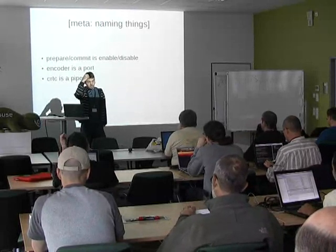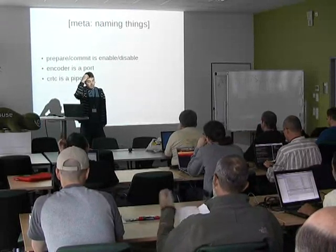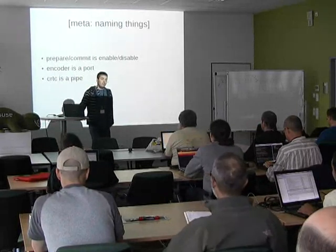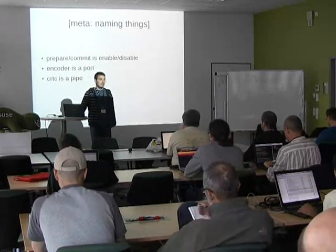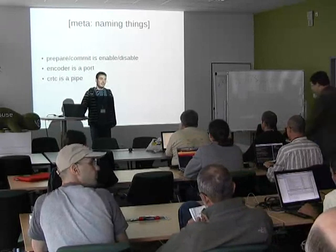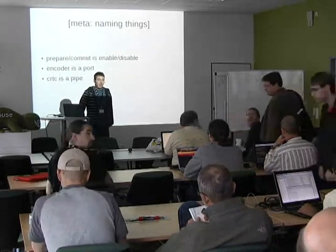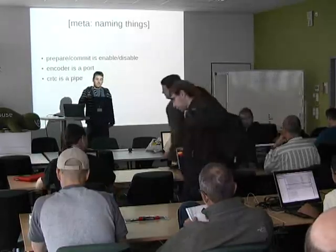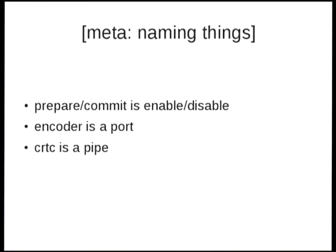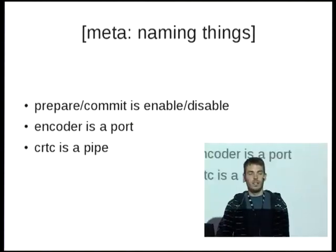The CRTC code has some prepare and commit hooks that essentially enable and disable things — prepare disables things and commit enables things again. At Intel, the encoder is usually called a port and the CRTC is usually called a pipe, so I'll probably mix those terms up.